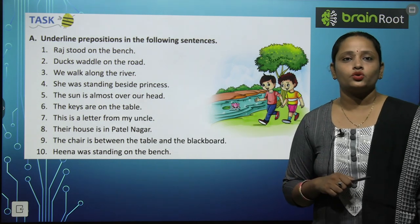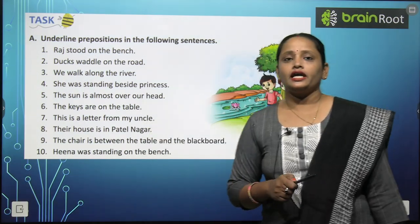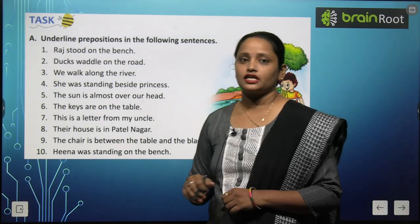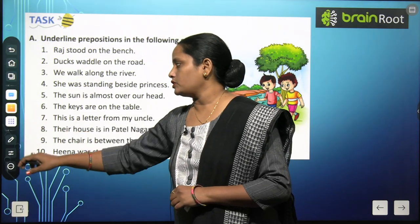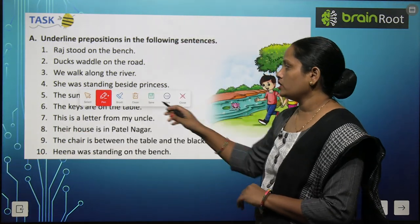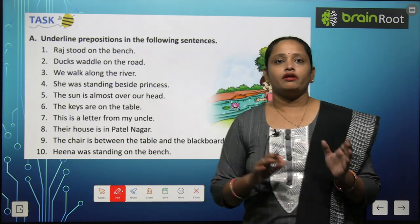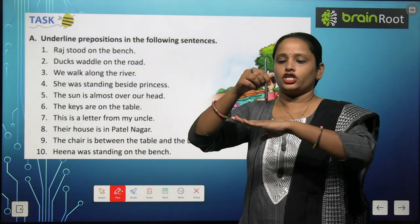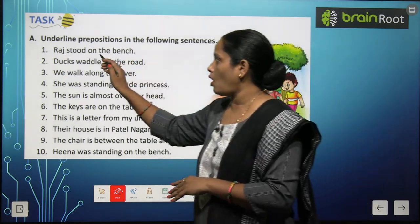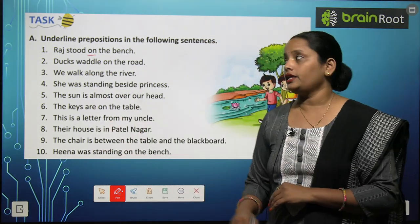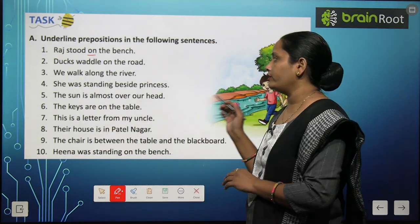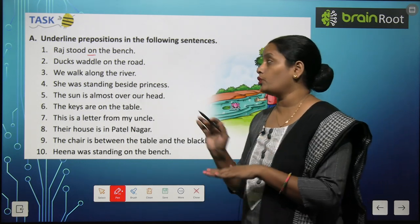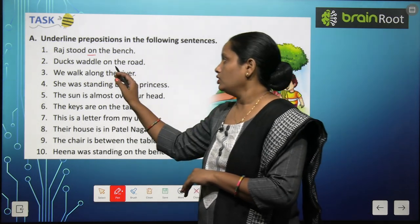Now let's do Exercise A — underline the prepositions in the following sentences. Inme hume prepositions ko underline karna hai. The first one is: Raj stood on the bench — bench ke upar khada ho gaya Raj, toh 'on' is the preposition. Next: Ducks walk on the road — ducks road pe chal rahe hain, toh 'on'.